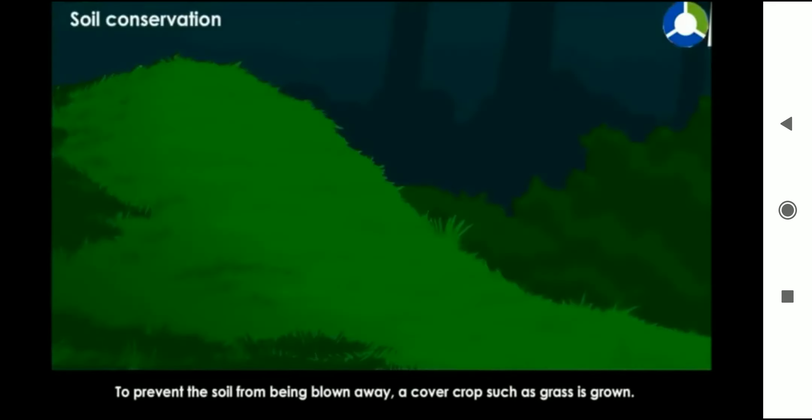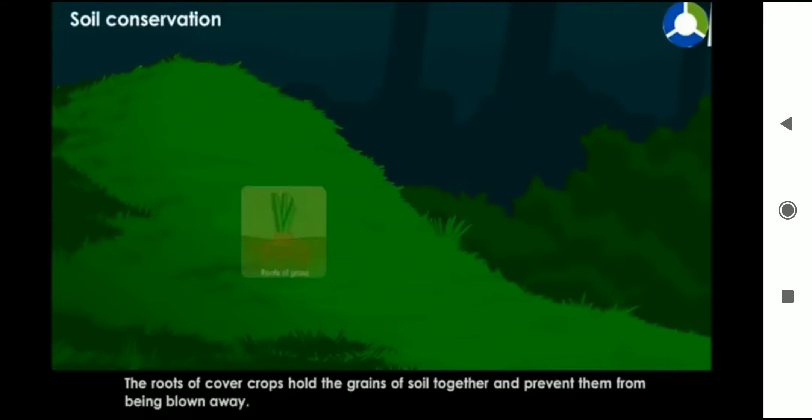To prevent the soil from being blown away, a cover crop such as grass is grown. The roots of the cover crops hold the grains of soil together and prevent them from being blown away.